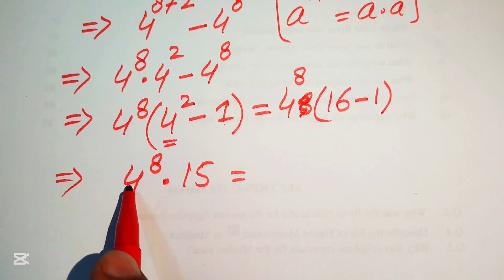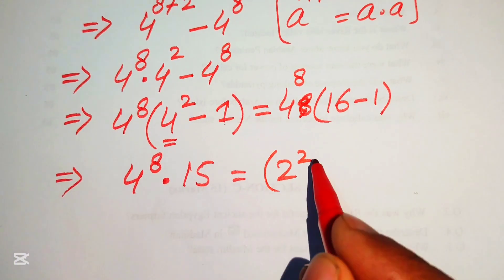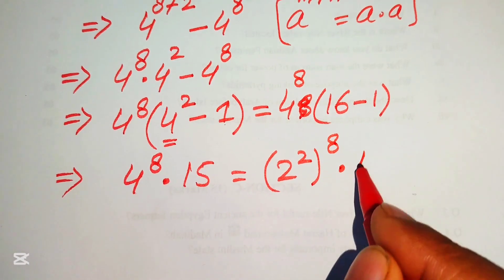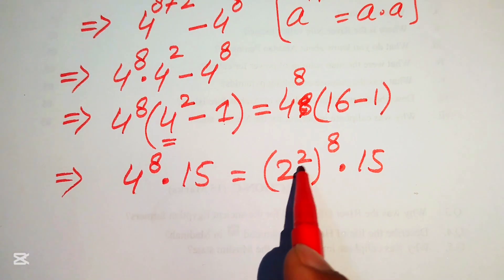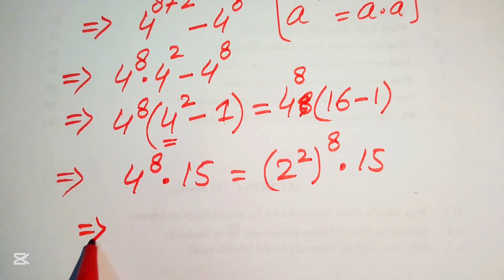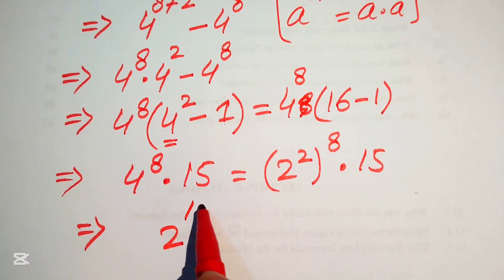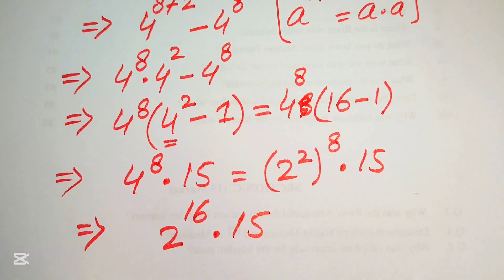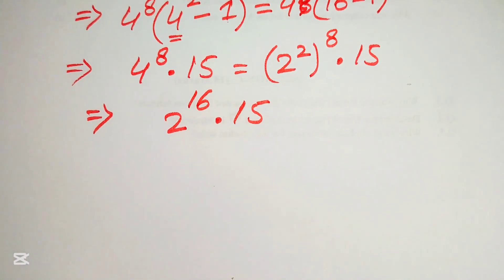Next, we focus on the base of 4 to the power of 8. We write 4 as 2 squared, so we have (2 squared) to the power of 8, multiplied by 15. Since we have an exponent raised to an exponent, we multiply them: 2 times 8 gives us 2 to the power of 16, multiplied by 15.